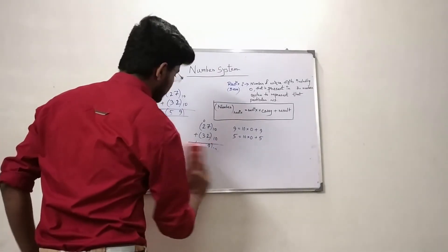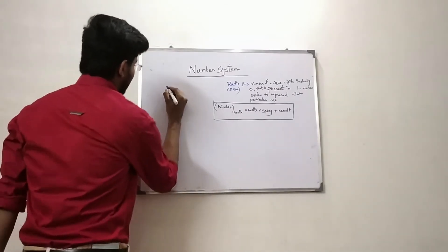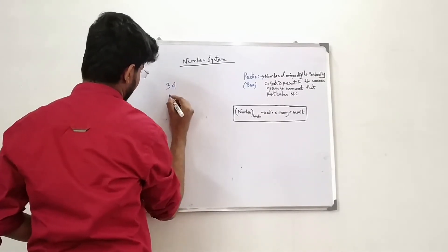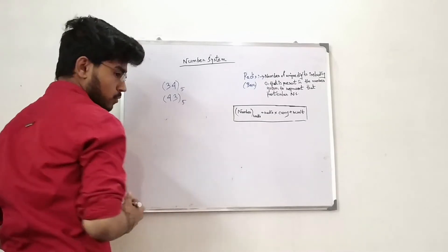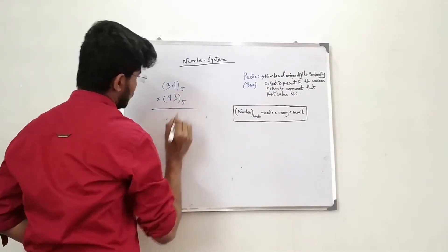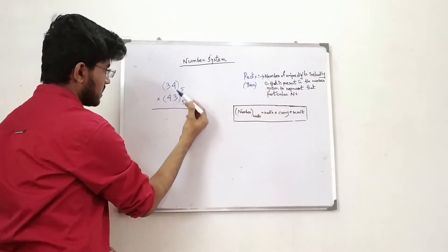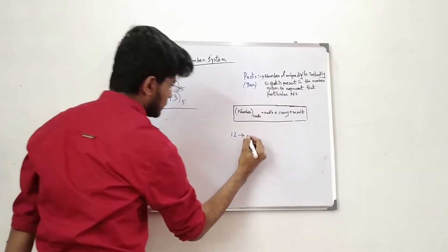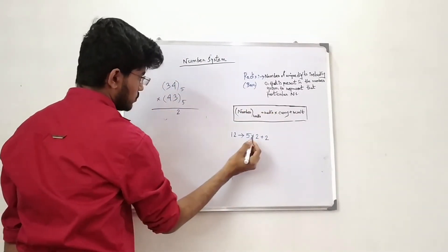Now suppose there are two numbers: 34 with base 5 and 23 with base 5. We have to multiply these two numbers. For multiplication we use the same formula that we used in our radix addition method. First of all we multiply 3 into 4, which is 12. We can write 12 as radix 5 times 2 plus 2. Comparing with the formula, 2 is the result and 2 is the carry.